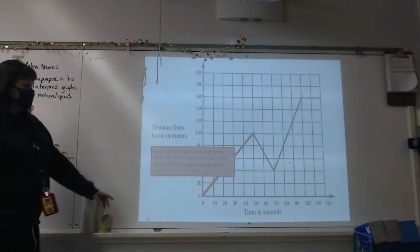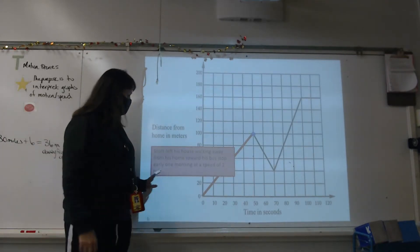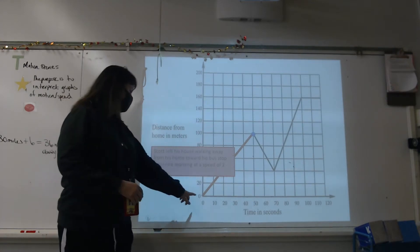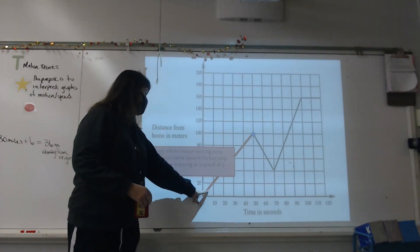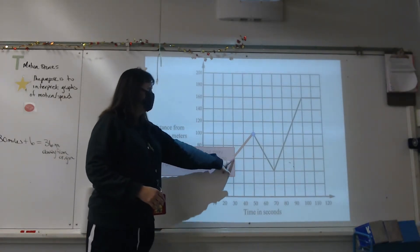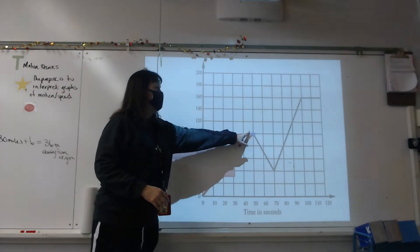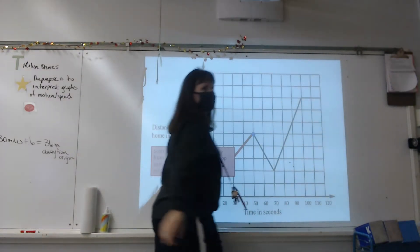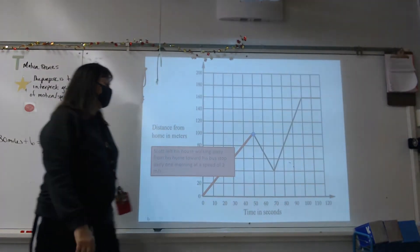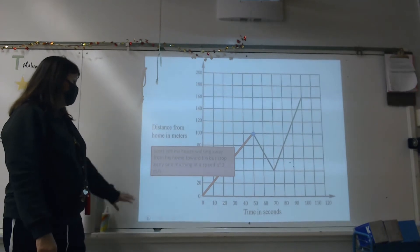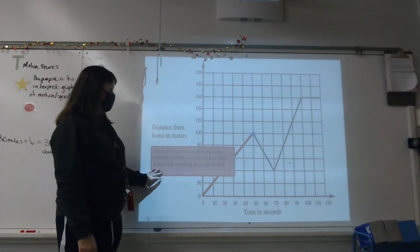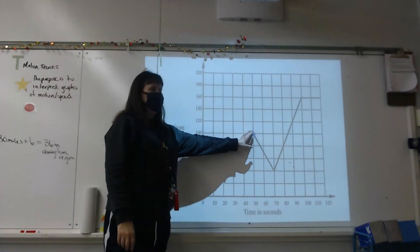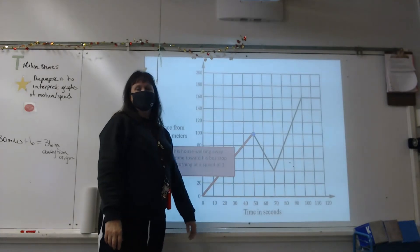In our first section, Scott is our person in the story. He leaves his house, walking away toward the bus stop early one morning, moving at two meters per second in this section of the graph.